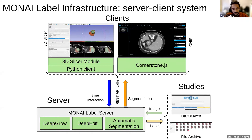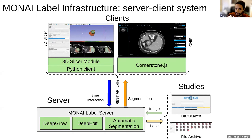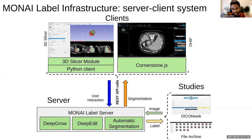MONAILabel has three main components. The first is the server, which hosts different MONAILabel apps. There are different approaches to annotate images: two interactive ones — DeepGrow and DeepEdit — and one automatic segmentation method with no interaction. Hopefully it will be clearer what I mean by interaction when I show the demo.